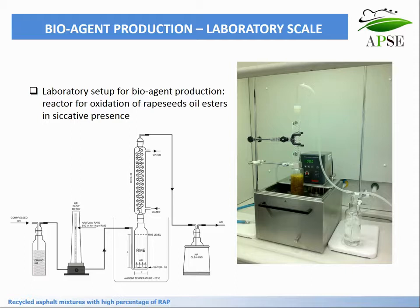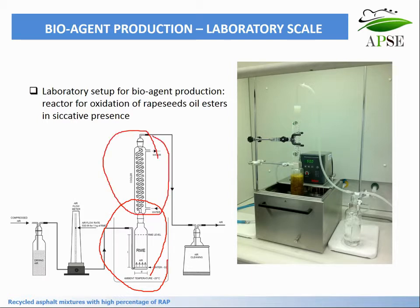Bio-agent production on a laboratory scale. This is the laboratory setup schematic, and this is an aerial picture from the lab. The idea was that compressed air was introduced into the reactor. The reactor was equipped with a cooling chamber and cooling column. During the process, run at two different temperatures, the material was produced.